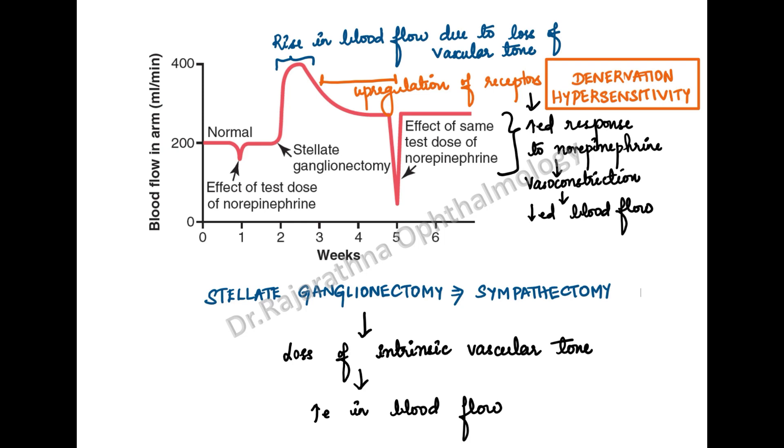When you look at the graph, you put norepinephrine — initially norepinephrine is a vasoconstrictor, so the blood flow is going to decrease a little bit. Now when you remove the stellate ganglion, you're doing a sympathectomy, so there is no longer a sympathetic drive to the blood vessel.